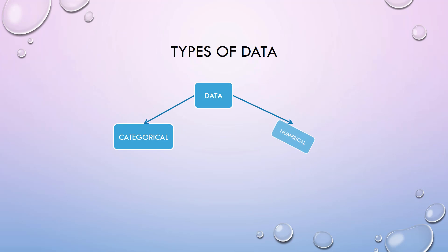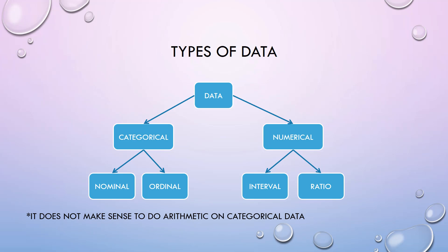The data are classified into two general types. The first type is categorical or qualitative data, and the second type is numerical or quantitative data.